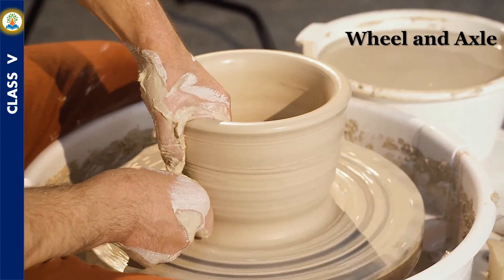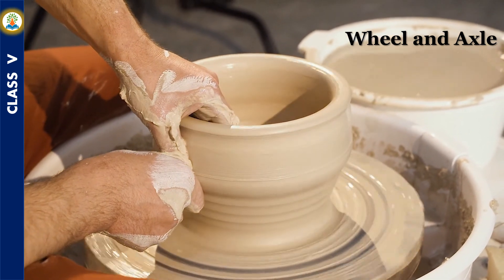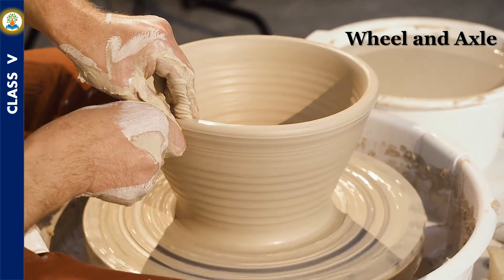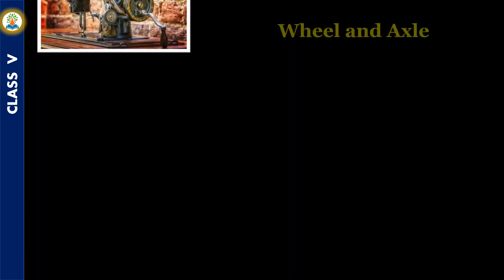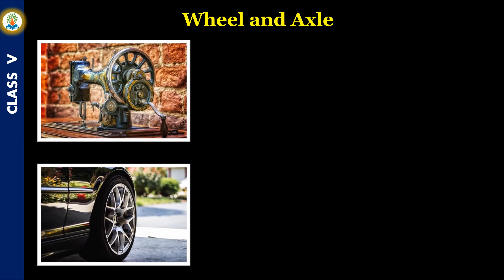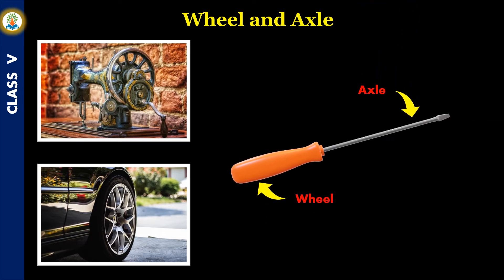Have you ever seen a potter at work? A potter pushes a large wheel around with the foot or a handle, and uses the force of the wheel to give shape to the clay at the center. Most machines — for example, sewing machines — have wheels to turn other parts. Some machines like cars, trucks, and trains move on wheels. The wheels used in these machines have a rod fixed in the center known as an axle. A wheel and an axle together make a simple machine.